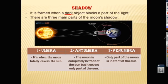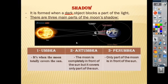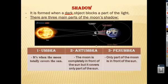There are three main parts of the moon's shadow, which are: umbra, antumbra, and penumbra. Repeat after me: umbra, antumbra, penumbra.